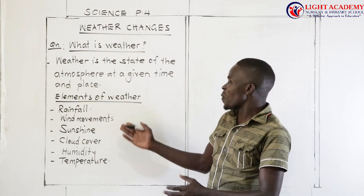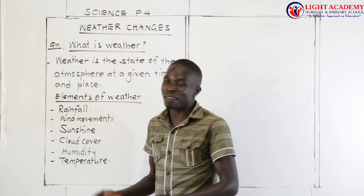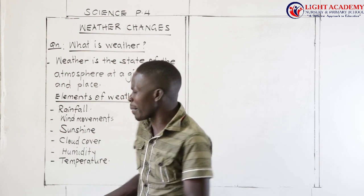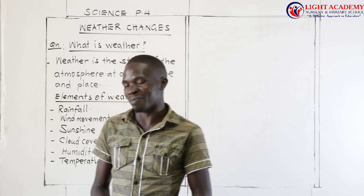The elements of weather include: rainfall, wind movements, sunshine, cloud cover, humidity, temperature, and many others. These are the major ones, which is why I am focusing on them.